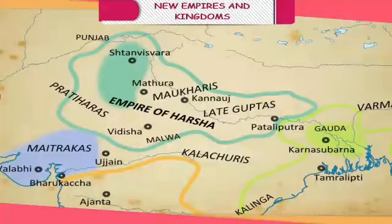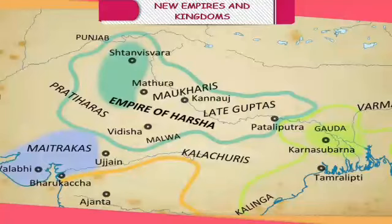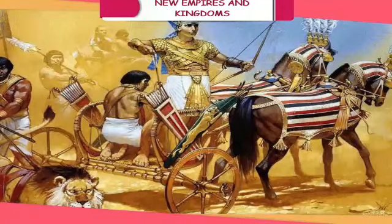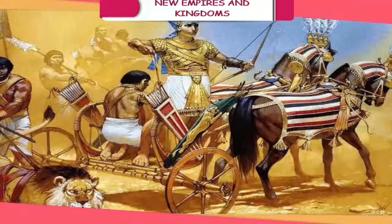Literacy and Education: Harshvardhana was a great ruler. He was literate himself and even composed famous plays like Ratnavali and Nagananda. During his rule, nearly a quarter of the revenue was spent on education. Nalanda became a world-famous seat of higher learning. According to the Chinese traveler Xuanzang, more than 15,000 students were getting free education at Nalanda. There were over a thousand teachers and more than 50 subjects were taught at the university. The selection process for admission was very strict.